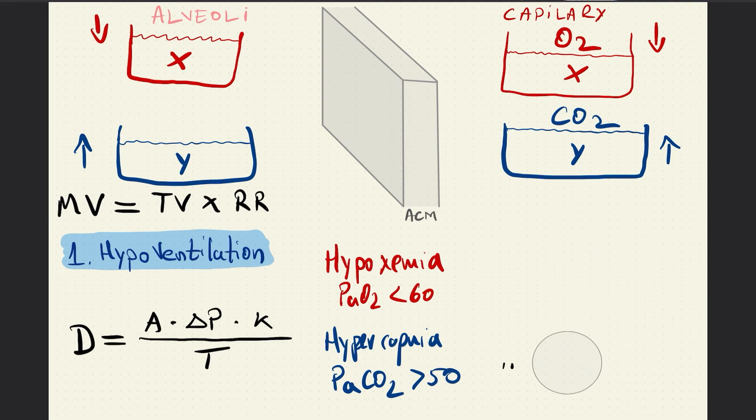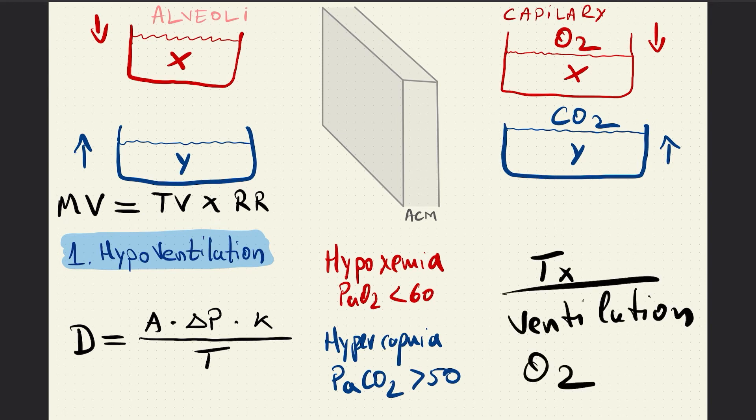The treatment for this is obviously ventilation and oxygen supply. Why? We attempt to increase the alveoli pressure so a new gradient occurs in order for gases to be transferred.